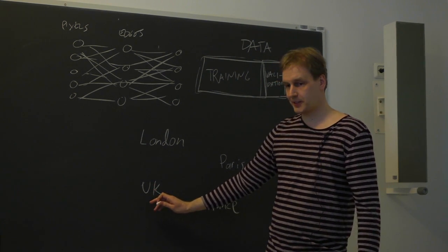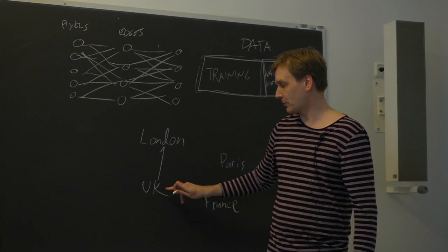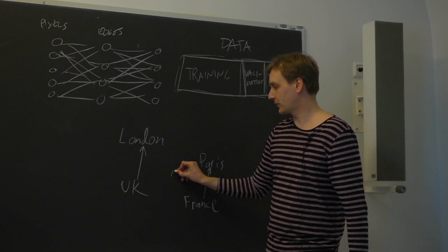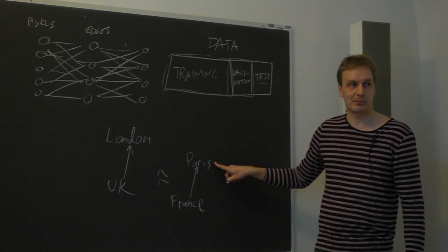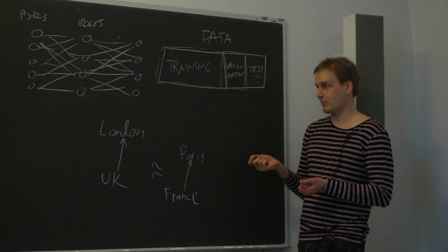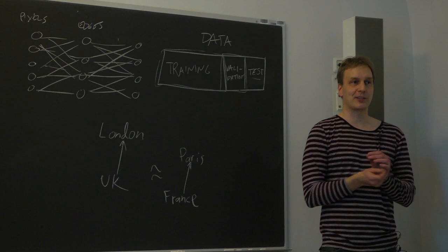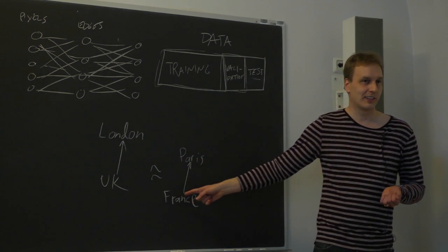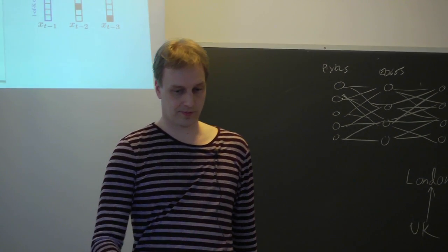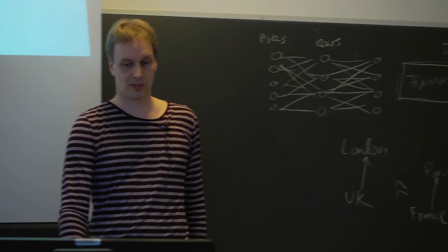That in the abstract space, London minus UK, so the vector that points from representation of UK to representation of London, is somewhat equal to the representation of Paris minus the representation of France. So not only are similar things close together, but there are some semantic relationships that you can... As we saw this interpolation between images, you can actually do computations with those representations. Somehow. So yes, this has been observed with those representations.